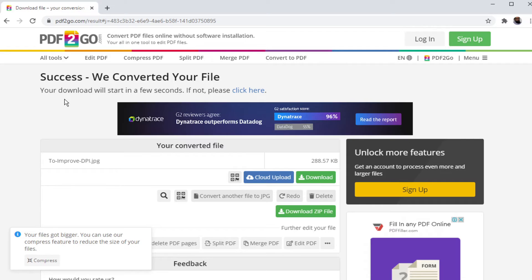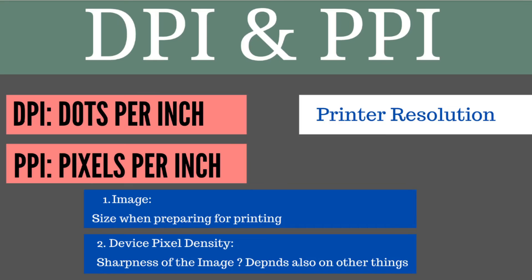So this is one of the tools you can use to increase the DPI of your Canva images. Now let us look at the difference between DPI and PPI. DPI stands for dots per inch and refers to printer resolution — it basically has nothing to do with digital images. PPI stands for pixels per inch and is used for images as well as for devices. Because we use these terms interchangeably, not many people know the difference and where each term should be used.